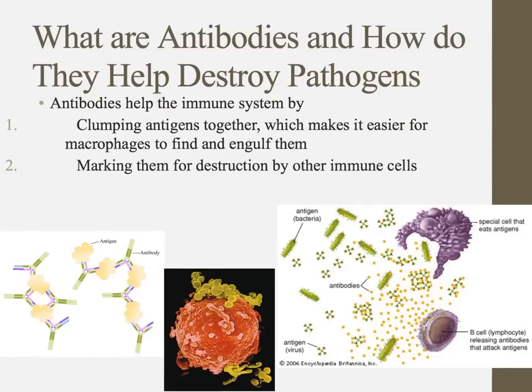Clumping antigens together makes it much easier for phagocytic leukocytes to come along and eat whole globs of pathogens and antigens. Antibodies can also mark pathogens for destruction by other cells — acting like a billboard for other immune cells to come and destroy them.